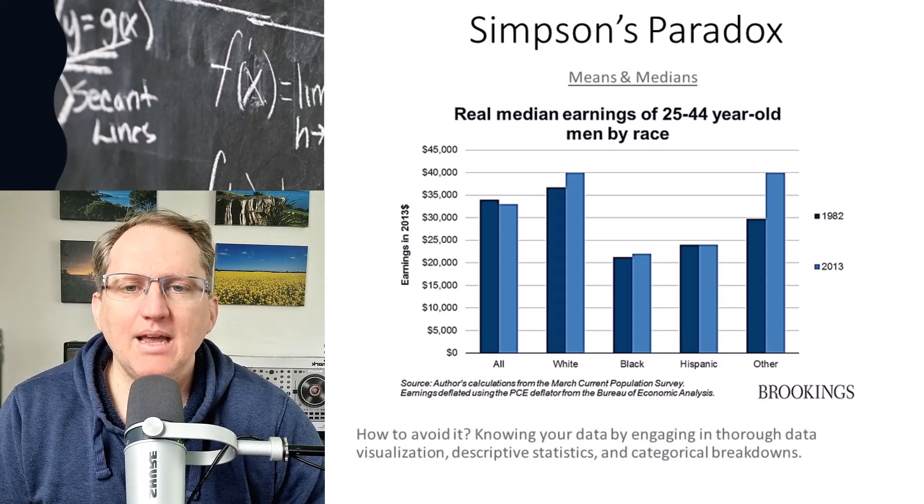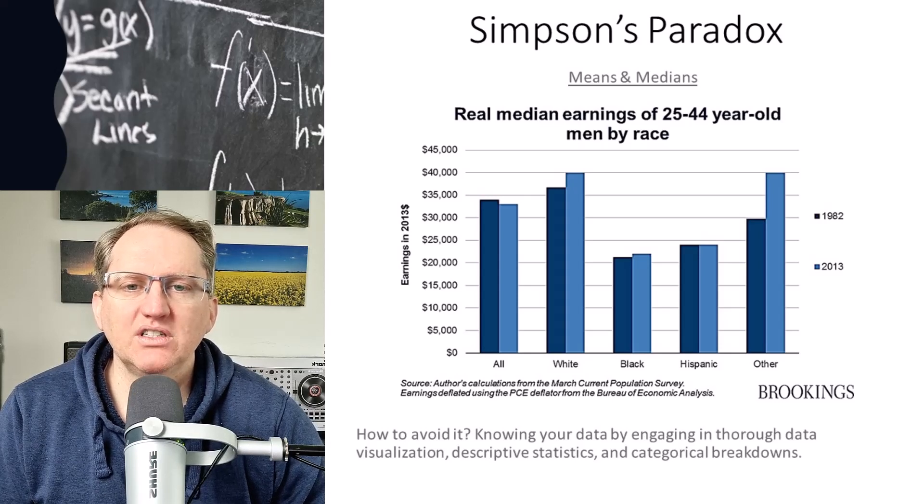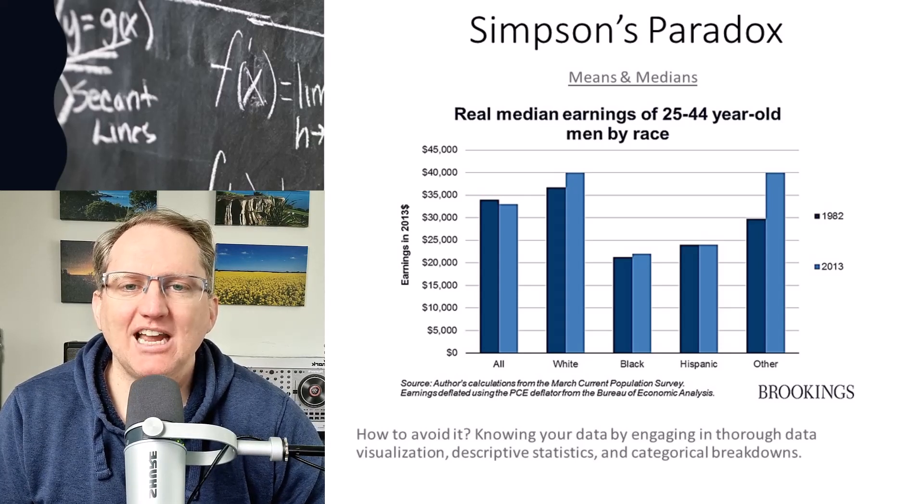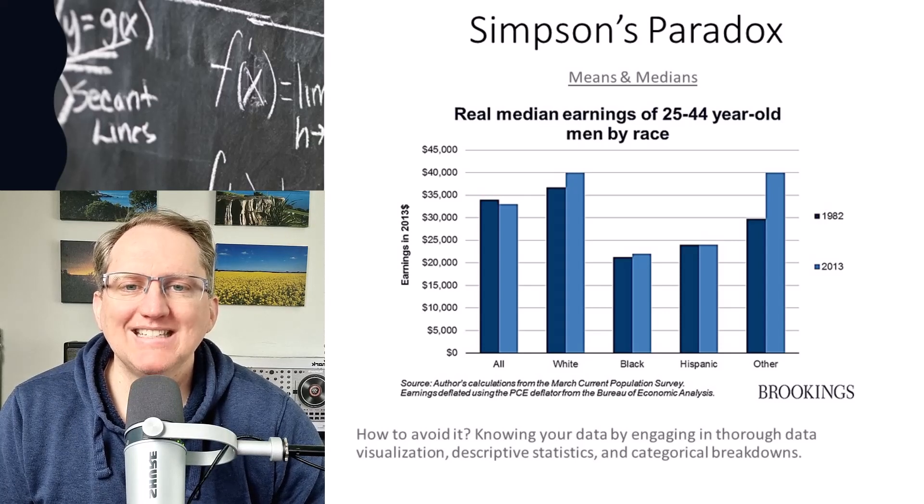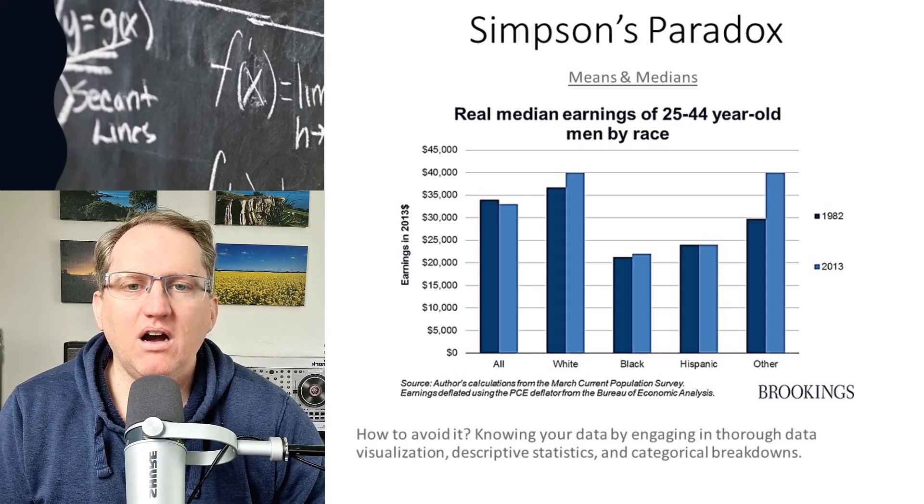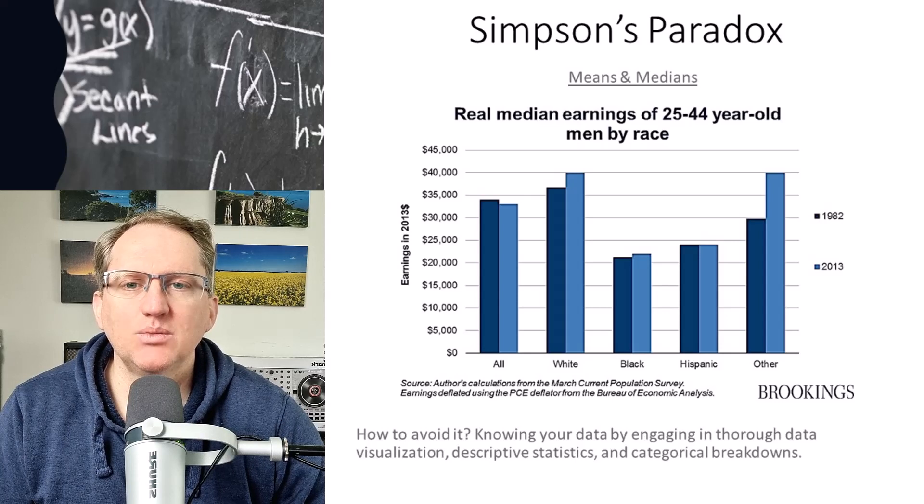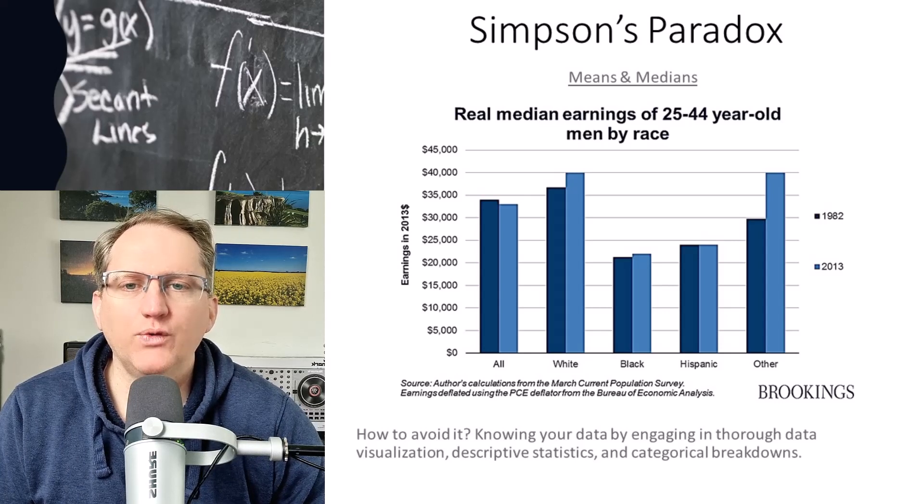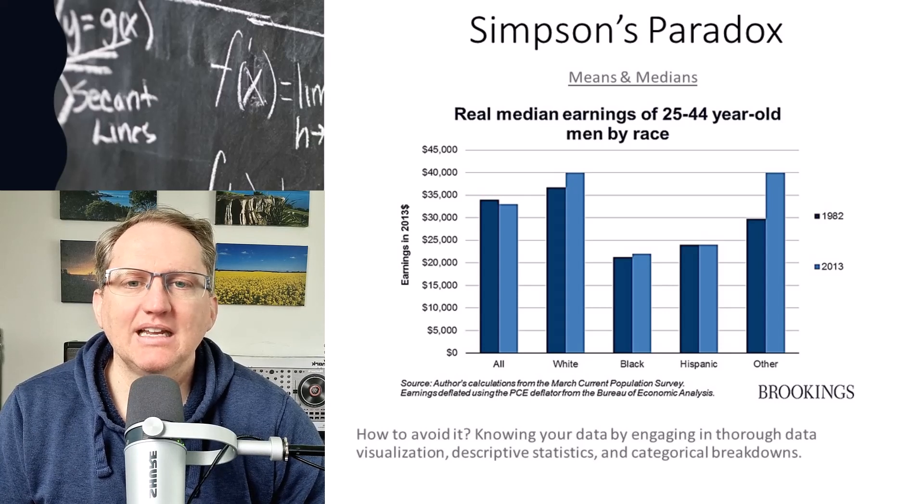If we think about what's happened here, what has happened is that the relative proportions of those different groups has changed. So even though each of the groups has increased, in the 2013 data there is a higher proportion of those low income groups and so that is pulling that overall figure down, even though within each of the groups there has actually been an increase.